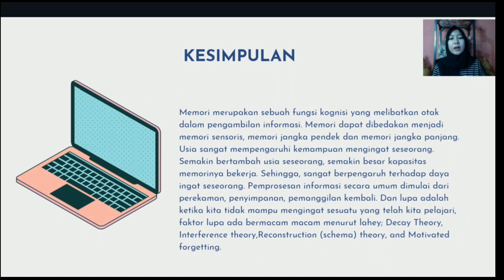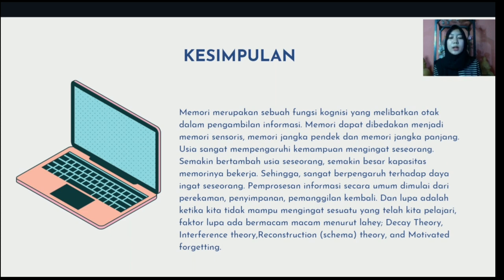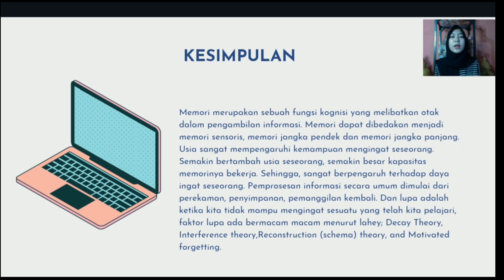In conclusion, memory is a cognitive function that involves the brain and retrieval of information. Memory can be divided into sensory memory, short-term memory, and long-term memory. Age greatly affects a person's ability to remember. Information processing generally starts from recording, storing, and recalling. Forgetting is when we are not able to remember something we have learned. There are various factors of forgetting according to Lahey: decay theory, interference theory, reconstruction schema theory, and motivated forgetting.